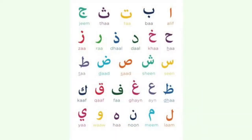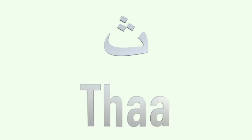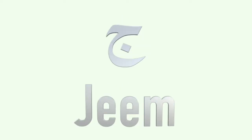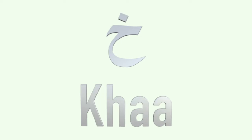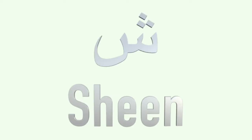As we see on the screen right now, those are the alphabets — the Arabic alphabets — and they go like this: alif, ba, ta, tha, jim, ha, kha, dal, dhal, ra, zayn, seen, sheen.